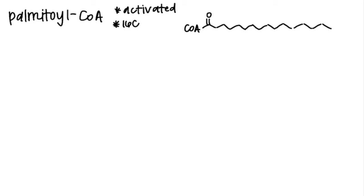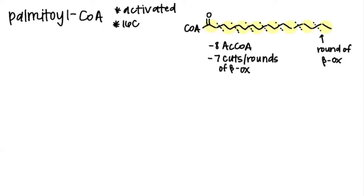You start counting from the end by two carbons because acetyl-CoA is two carbons. Every two carbons make a cut, and each cut is a round of beta oxidation, and each molecule in between is an acetyl-CoA. In total we have eight acetyl-CoA and seven cuts or rounds of beta oxidation.